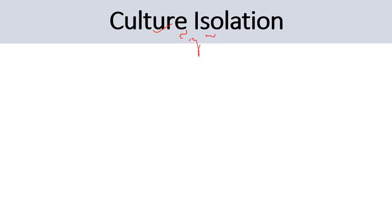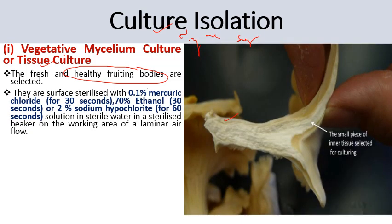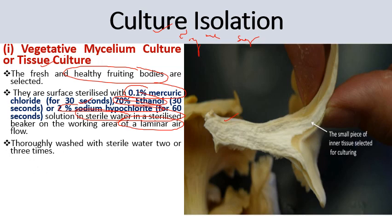Next comes culture isolation. For mushroom culture isolation we use different types of tissues: vegetative tissue, multi-spore culture, and single spore culture. Firstly, vegetative mycelium culture or tissue culture: in this type, we use healthy or fresh fruiting bodies with desirable characteristic features. These fruiting bodies are surface sterilized using 0.1% mercury chloride for 30 seconds, 70% ethanol for 30 seconds, and 2% sodium hypochlorite for 60 seconds in sterile water in a sterilized beaker on the working area of a laminar airflow. Then it is thoroughly washed with sterile water 2 to 3 times.